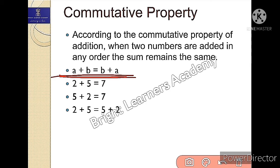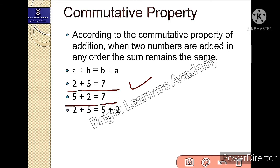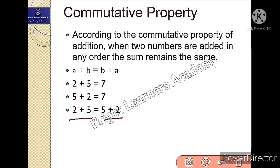What does it mean? We can add in any order. Two plus five is seven, and if you do five plus two it is also seven. So in this way we can say two plus five is equals to five plus two, because both answers are seven.